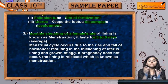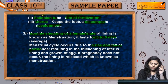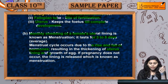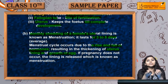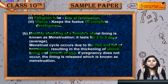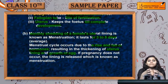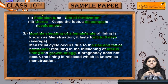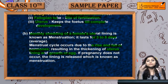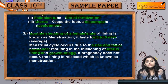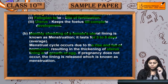Ab, jo uterus hai uski jo inner lining hai wo thickening kyun hoti hai? Rise and fall of hormones hota hai, jiski wajah se uterus ki lining thick hoti hai aur wahan pe jo egg grow karta hai — fertilized egg grow karta hai. Ab maan lo if fertilization nahi hui, to uterus ki jo lining develop hui hai — taaki wahan pe agar egg ki fertilization ho to fetus achhe se nourishment le sake aur asani se reh sake — but if fertilization nahi hui to us inner lining ki koi zaroorat hi nahi hai, to wo lining shed off hona shuru ho jaayegi.